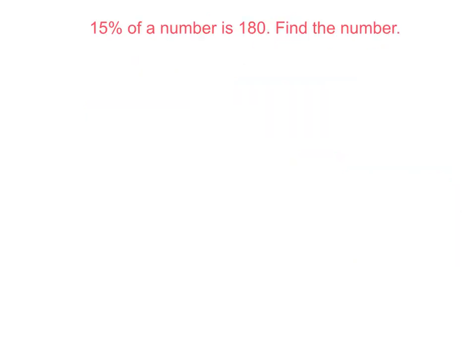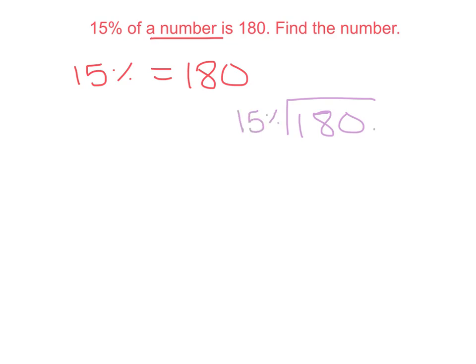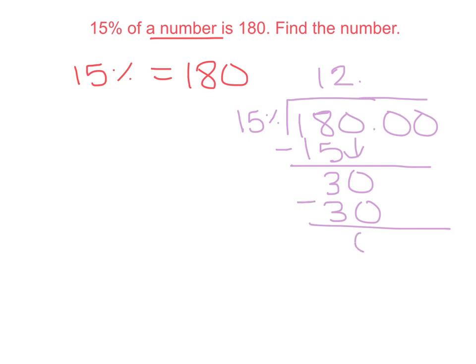Now we are going to practice finding the whole amount. It says 15% of a number is 180 — find the number. We know 15% is equal to 180. First we want to find 1%. We take 180 and divide it by the 15%. 15 goes into 18 one time; subtract and you get 3. Bring down the 0 — 15 goes into 30 two times, which is 30. Bring down the 0 — 15 goes into 0, zero times. So our 1% is equal to 12.